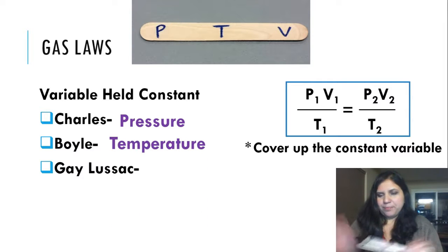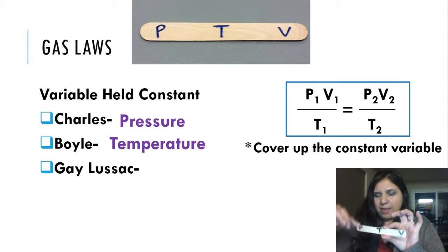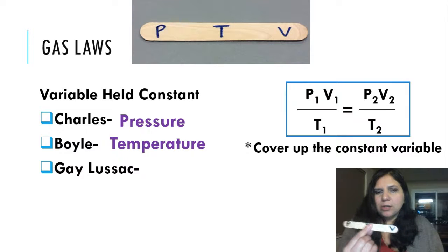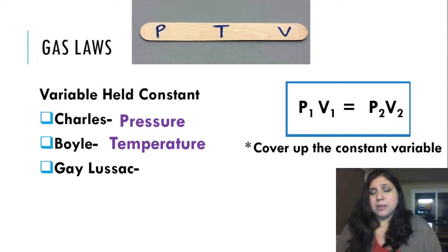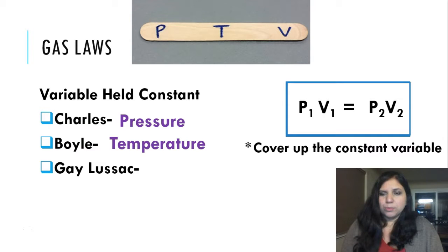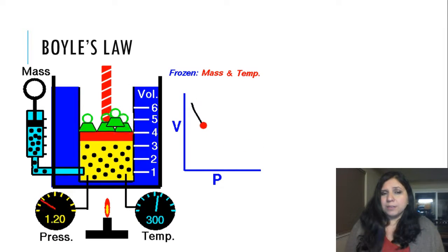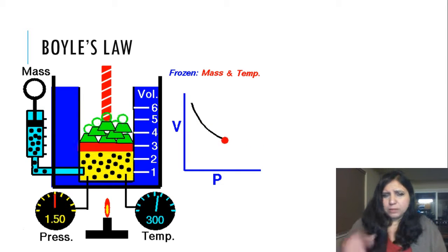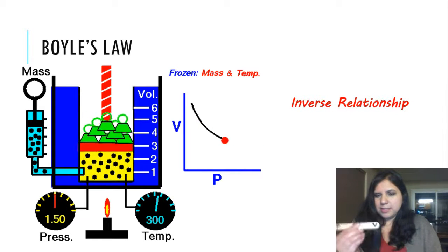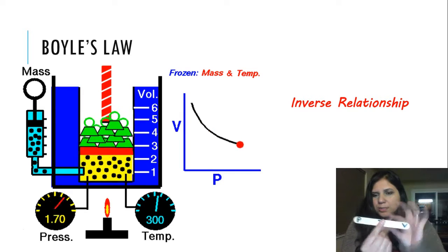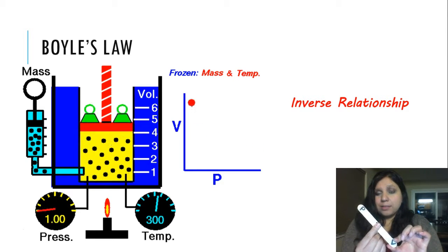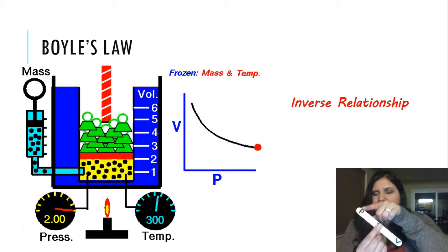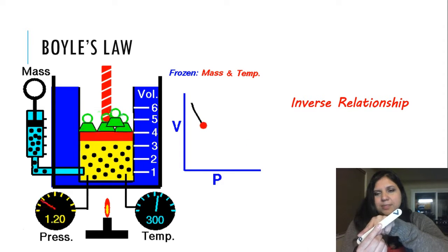Now Boyle's Law. In 'paid TV can be,' Boyle's Law holds temperature constant. We're looking at the relationship between pressure and volume. Cover up temperature and what's left is P1V1 = P2V2 — that's the equation for Boyle's Law. If we graph Boyle's Law, we get an inverse graph — volume versus pressure is an inverse relationship. If you decrease the volume, pressure goes up; it does the opposite. If you decrease pressure, volume goes up. Inverse relationship.